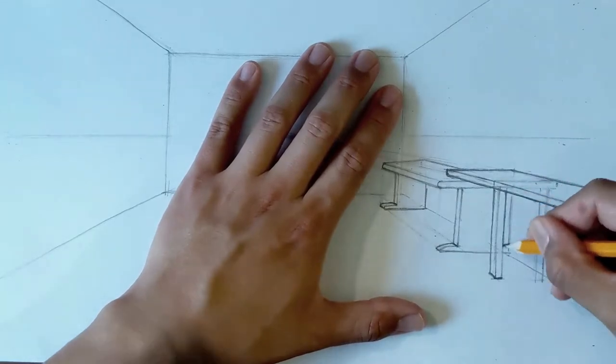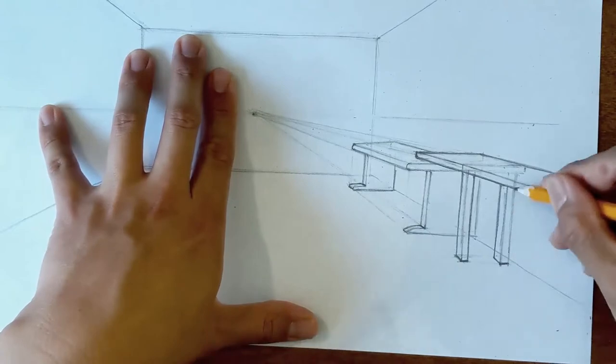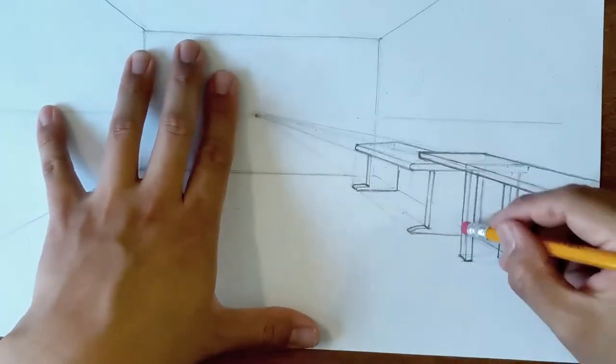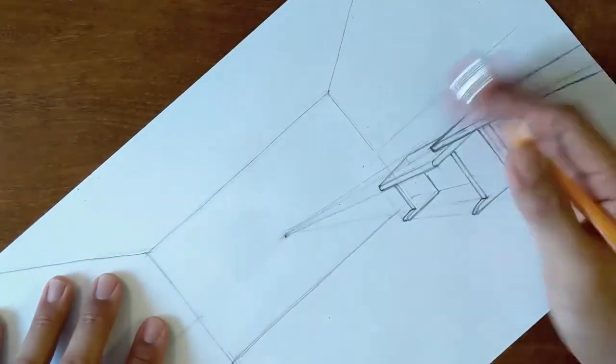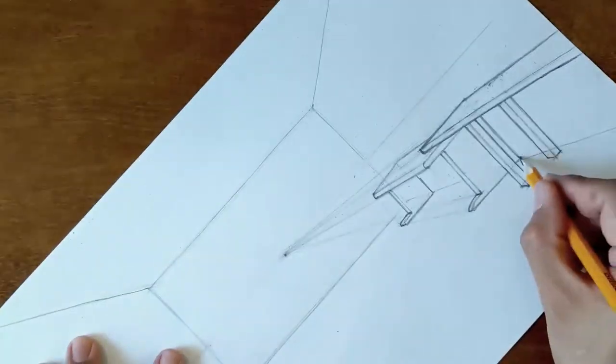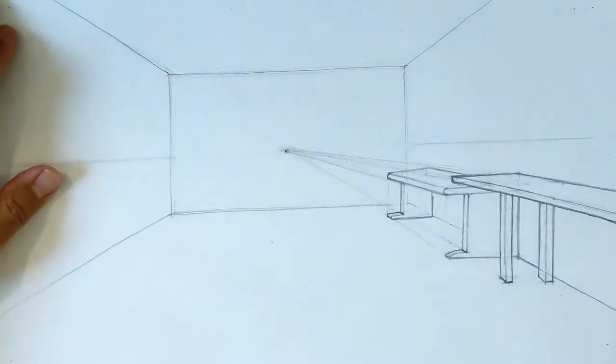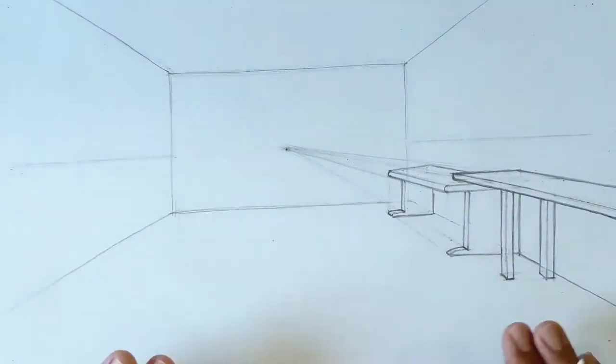Meaning in retrospect I could have tapered the legs so they're a little thinner on the bottom. It would have made it look a little more natural. Right now it looks like two by twos or maybe even four by fours that are holding up a small plank of wood. That's all right, it's a learning process.